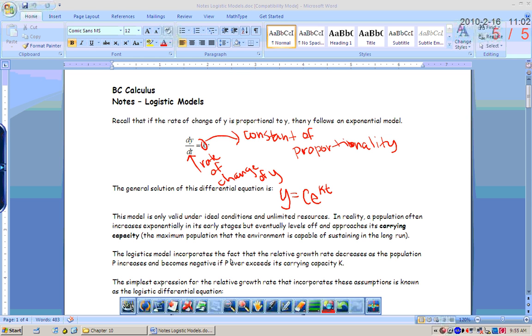The logistic model incorporates the fact that the relative growth rate decreases as the population p increases, and it becomes negative if p ever exceeds its carrying capacity. So if you exceed the carrying capacity, then some of your population has got to die off, and the population will decrease. The simplest expression for this is known as the logistic differential equation.